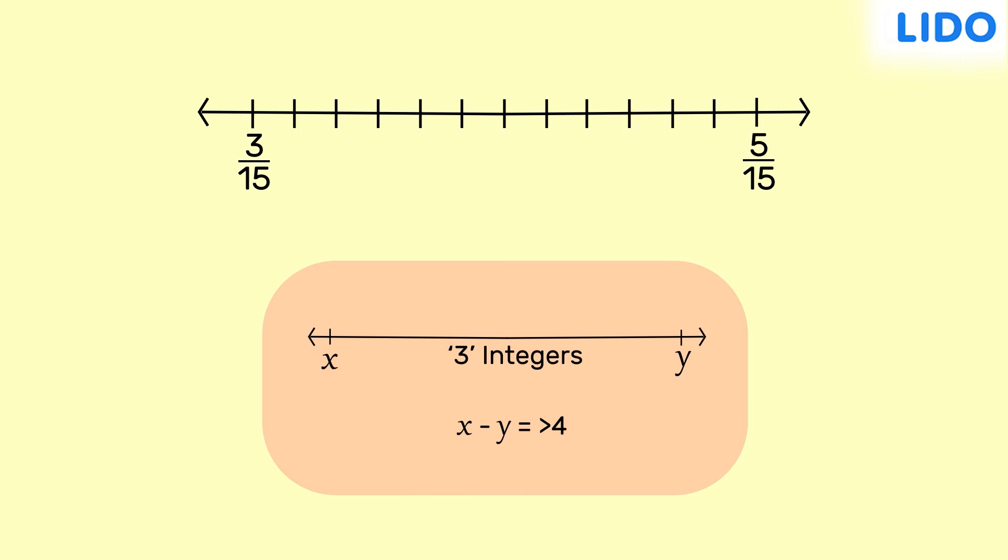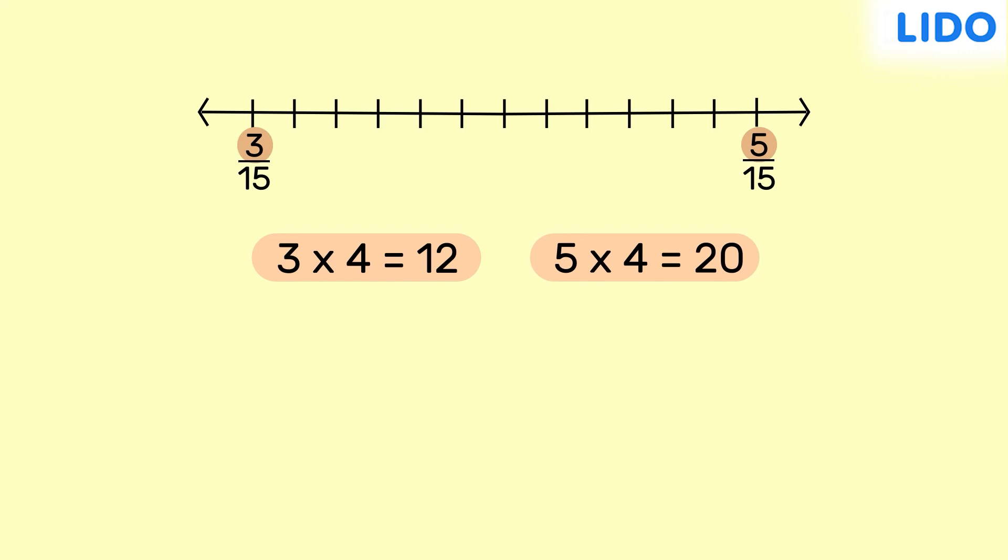But, the difference between the numerators of the equivalent fractions we just obtained is 2. Remember, these fractions are equivalent to the rational numbers in question. What if we multiply the integers 3 and 5 by 4? 3 times 4 is 12 and 5 times 4 is 20.